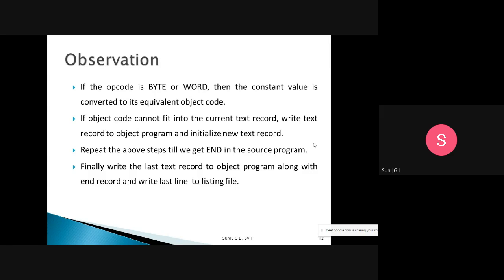Repeat these steps until the end of the source program. Finally, write the last text record to the object program along with the end record, and write the last line to the listing file. These are the three final steps when END occurs.